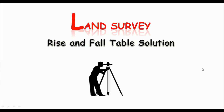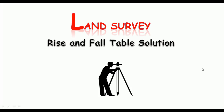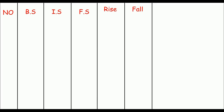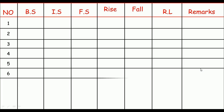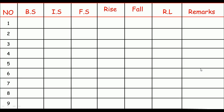The rise and fall table can be used to determine the reduced level of points which are taken at staff rod using a leveling machine. Before starting the solution, I'll begin by drawing the rise and fall table. This table contains columns for: number, back sight, intermediate sight, fore sight, rise and fall — that's why this table is known as the rise and fall table — and then the RL, and of course remarks.